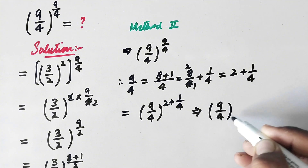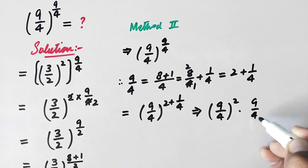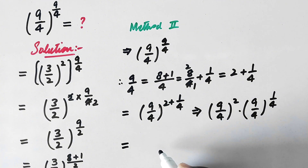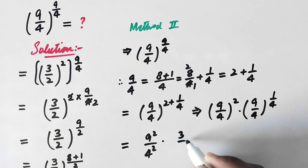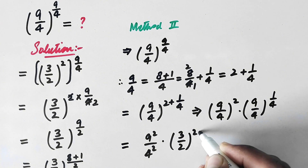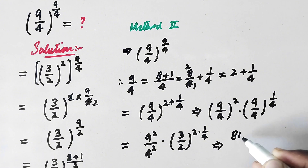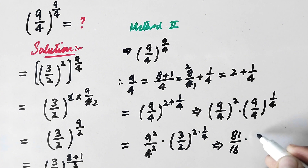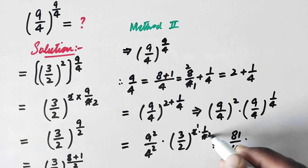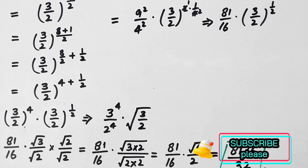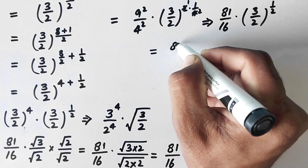So here we can write 9 over 4 to power 9 over 4 as 9 over 4 to power 2, times 9 over 4 to power 1 over 4. And now here will be 9 squared over 4 squared, times 9 over 4 to power 1 over 4. This implies that 9 squared is equal to 81, over 4 squared is equal to 16, times 3 over 2 to power 1 over 2.